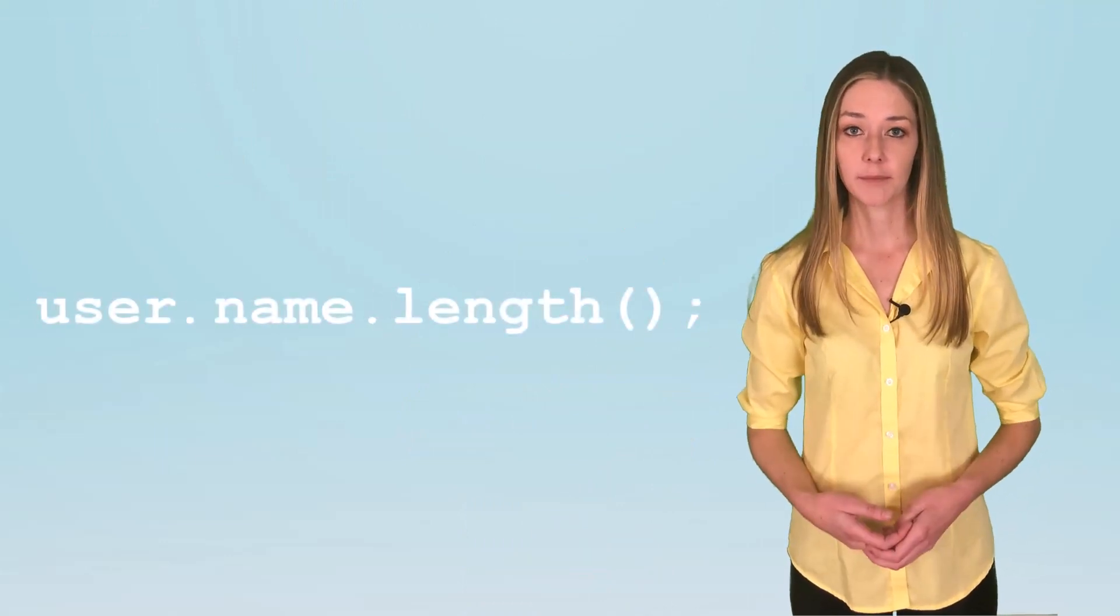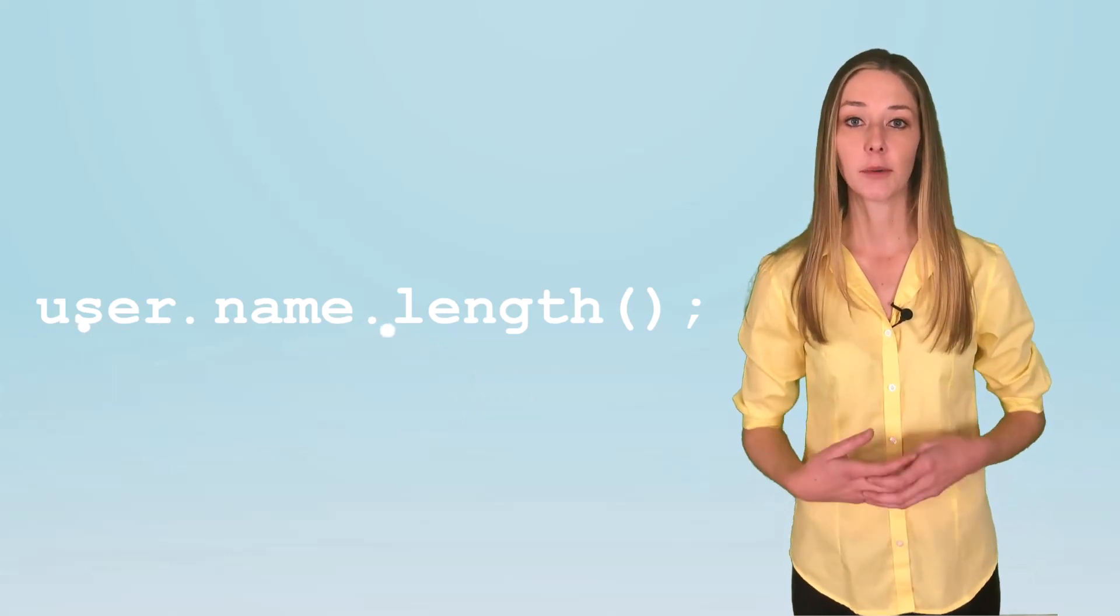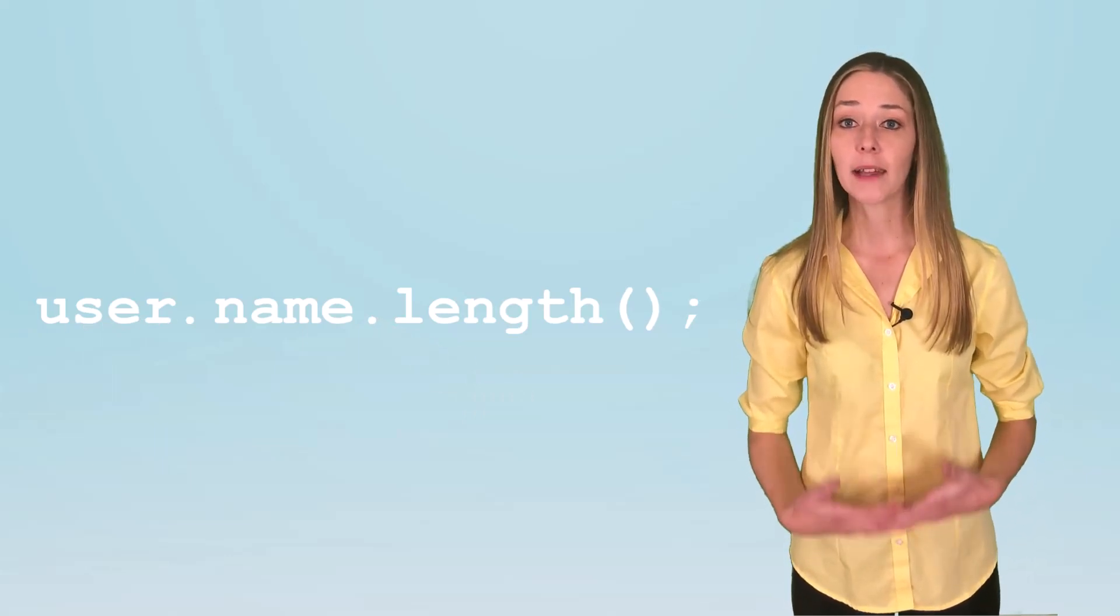Number 9. Java uses dot notation. To chain objects, properties, and methods together, Java uses dot notation. Most other programming languages do as well.